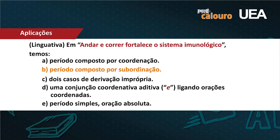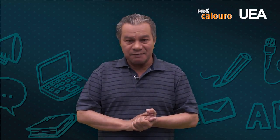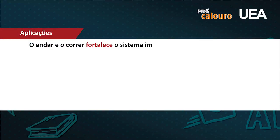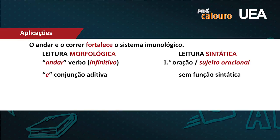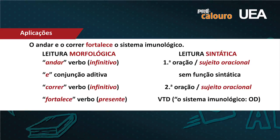A letra E fala de período simples, oração absoluta — claro que você já passou por essa fase. Vamos à leitura morfossintática: 'andar' agora é verbo, está no infinitivo, é a primeira oração, é sujeito oracional. O 'e' continua sendo conjunção coordenativa aditiva, sem função sintática. 'Correr' é verbo, está no infinitivo, é a segunda oração e é o sujeito oracional. E 'fortalece' é verbo no presente, transitivo direto, acompanhado do complemento direto. Conclusão: período composto por subordinação, três orações — duas subordinadas e uma principal.